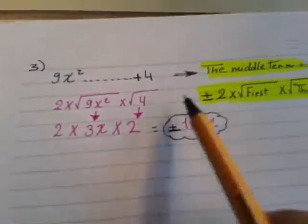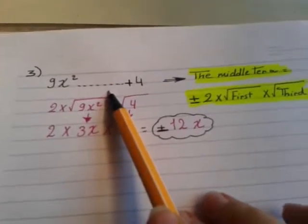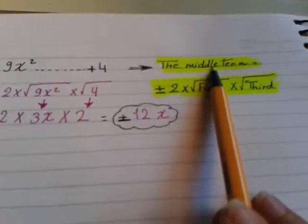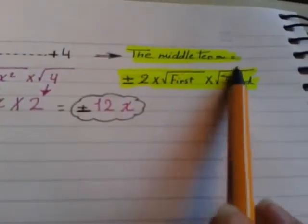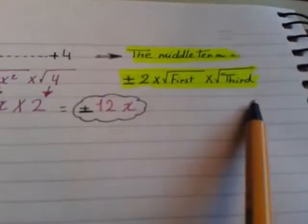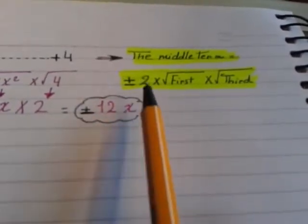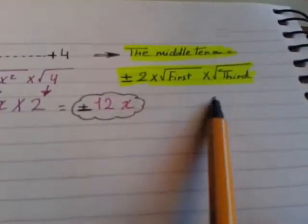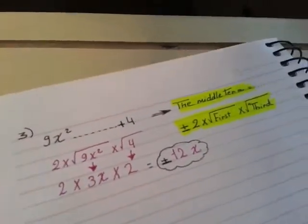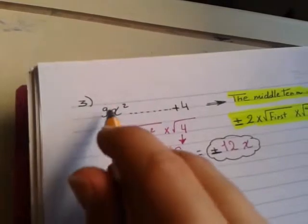Example number 3. If the missing term is the middle. Again I have another rule for the middle term. But this is a little bit different. The middle term equals positive or negative 2 times root of the first time root of the third. I can get root of the first and root of the third before starting to solve this problem.